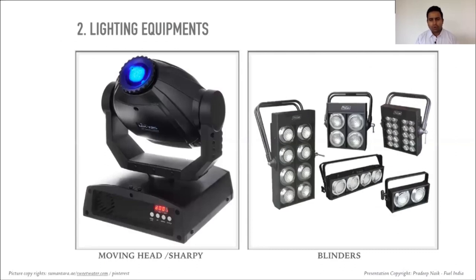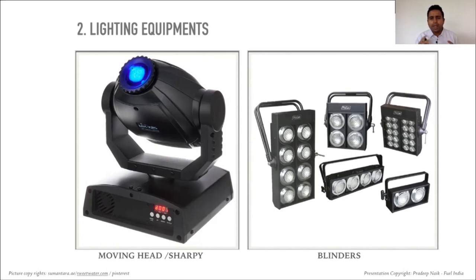The next is the moving head, also called a sharpie. As the name suggests, it keeps moving and revolving in all directions. It can be used as a sharpie with a beam light — you may have seen at big shows like Sunburn where it creates multiple beams on stage. It can be placed at stage corners or hung upside down from the truss, all remotely controlled through the lighting mixer. You can also customize the lens with a company logo, so the logo is projected as the light moves across a wall or backdrop.